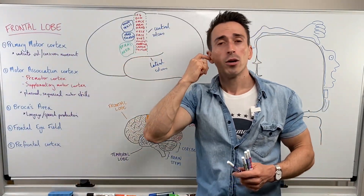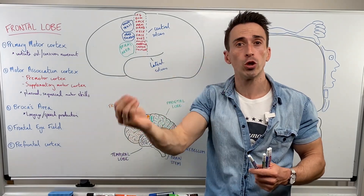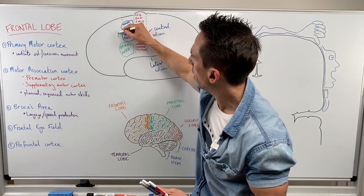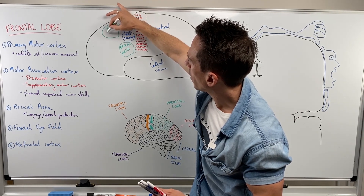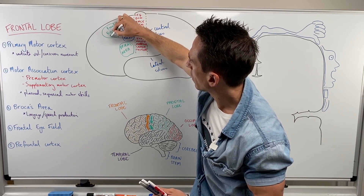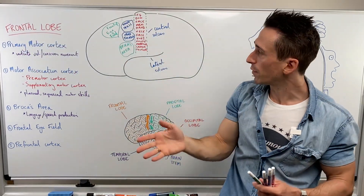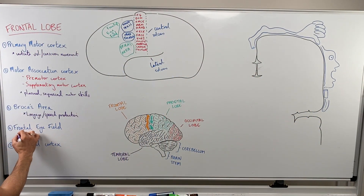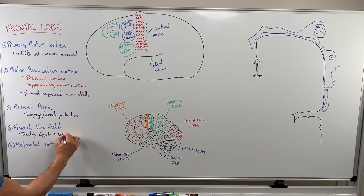If you have damage to Broca's area, you have Broca's aphasia — the inability to produce words. Now, the frontal eye field sits around about here. The frontal eye field is important for following and tracking objects — if you see an object jump into your vision and can follow and track it. It's also important for rapid eye movement.